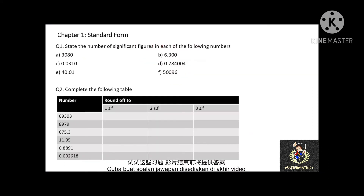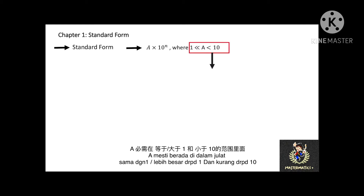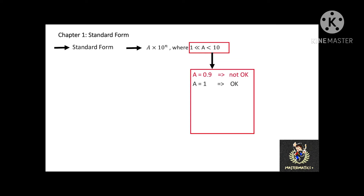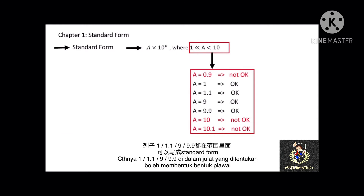You may pause the video for 5 minutes and try this question. The answers are provided at the end of this video. The next topic of this chapter is standard form. Standard form is used to express a very large number or a very small number. It is written as a times 10 to the power of n, where a must be greater than or equal to 1 and less than 10, and the index number n can be a positive or negative integer. When a equals 0.9, 10, or 10.1, it is outside the valid range and therefore cannot be a standard form. When a equals 1, 1.1, 9, or 9.9, it is within the range and can be a standard form.